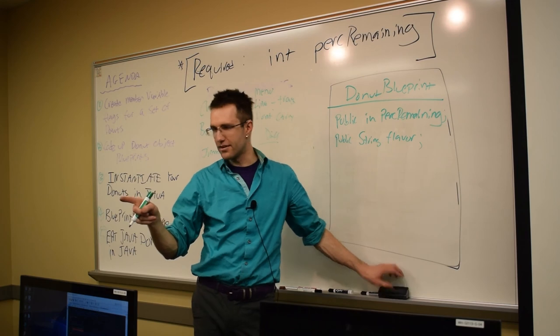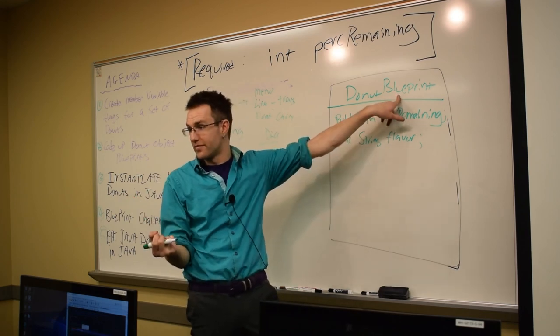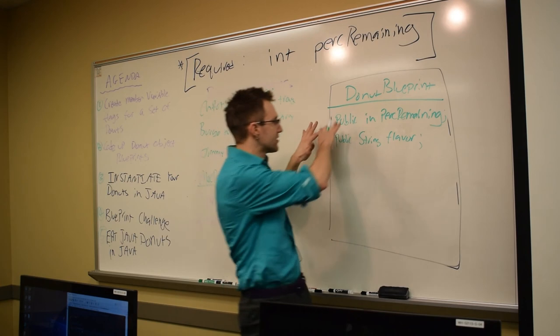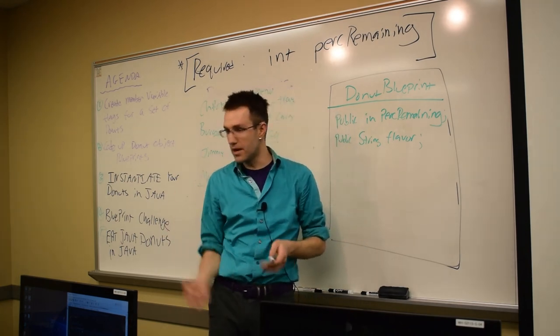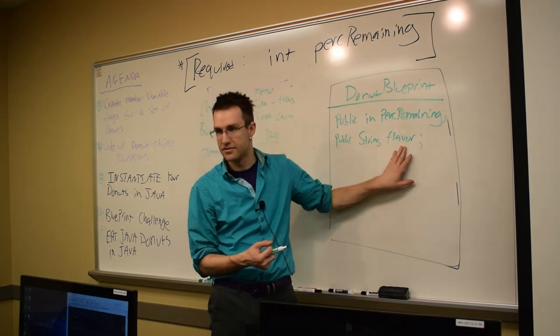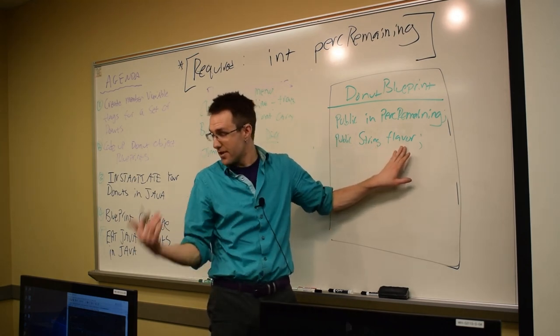It's a variable. We're getting there. It's a, because this class is a blueprint. So we are designing the structure. We're saying that every single donut object we make will have a flavor. The flavor may vary. It's a variable.